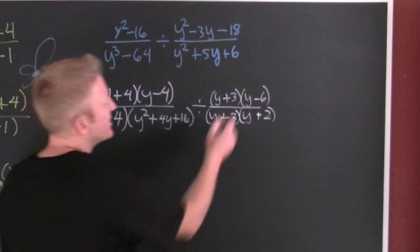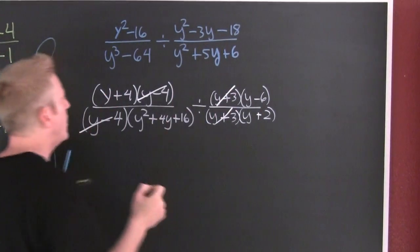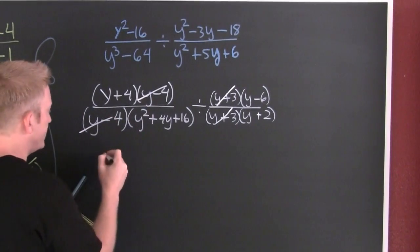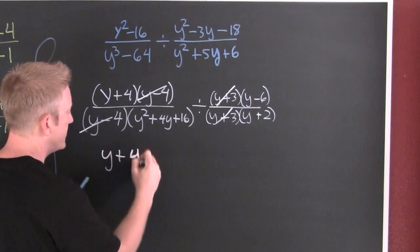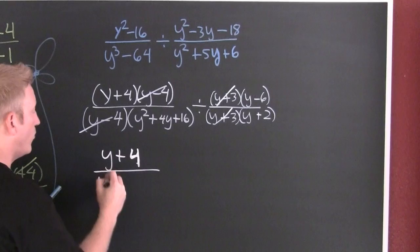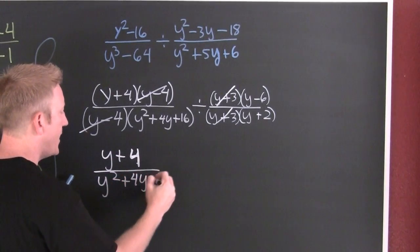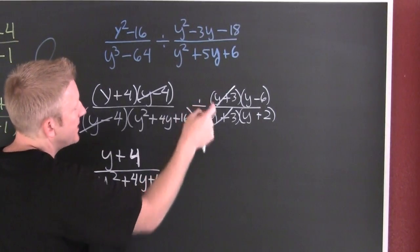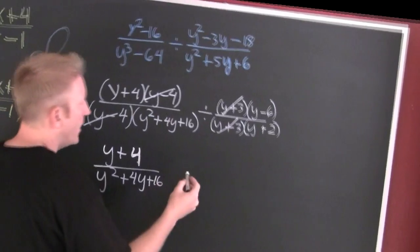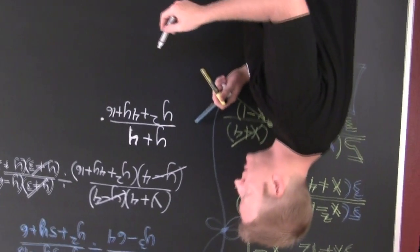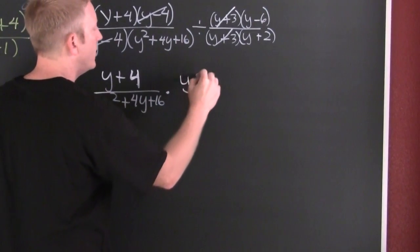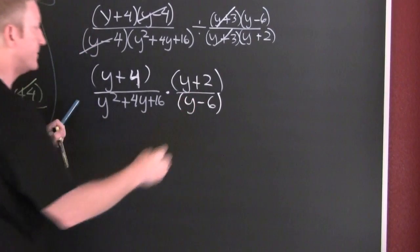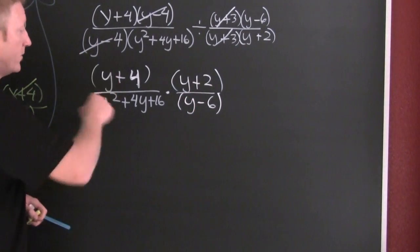Do you want to reduce before you flip? Sure. Dividing by a fraction is the same as multiplying by the reciprocal. My first rational expression is y plus four, divided by y squared plus 4y plus 16. Now dividing by a fraction is the same as multiplying by the reciprocal — flip it before you multiply. The reciprocal gives us y plus two, divided by y minus six.